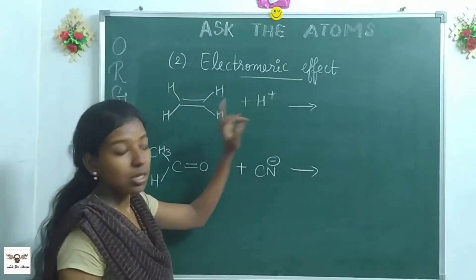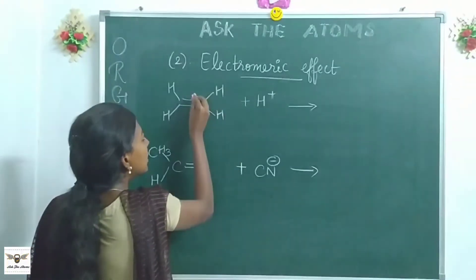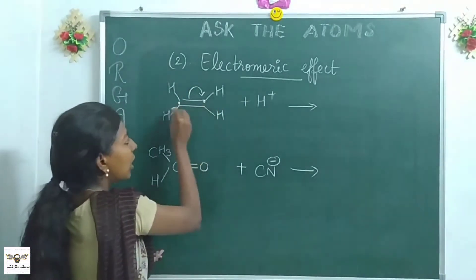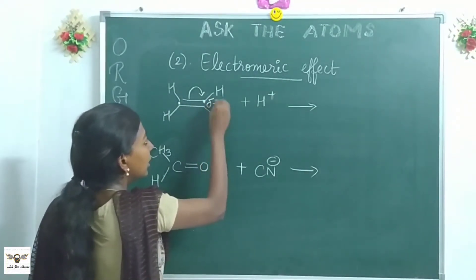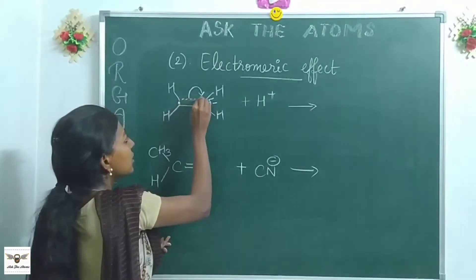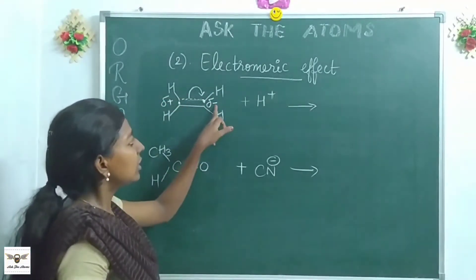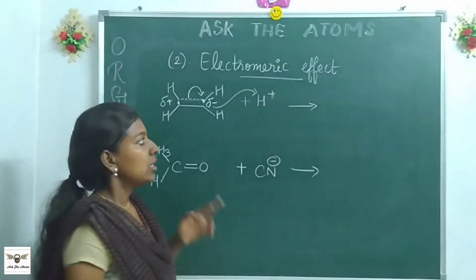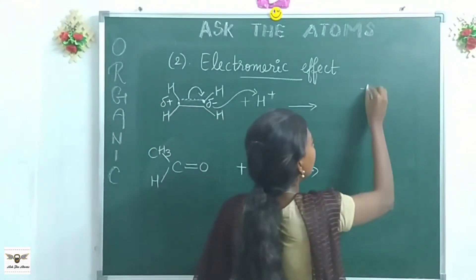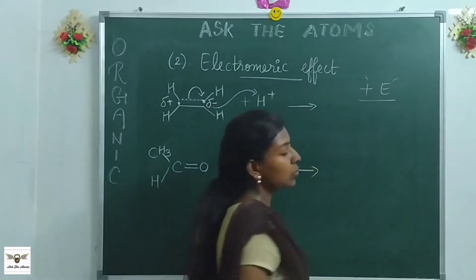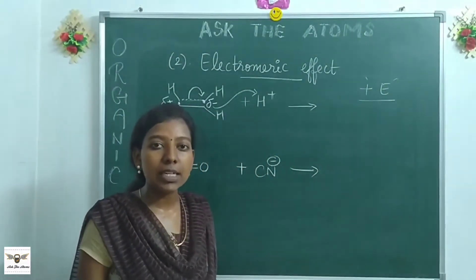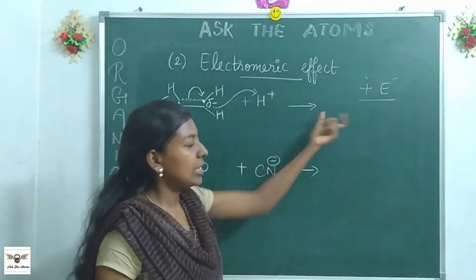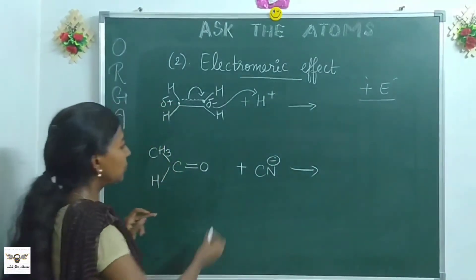Look at the first case: I have an alkene, ethylene, plus H⁺. H⁺ is an electrophilic reagent. H⁺ is positive, so an electrophile always wants to get attracted towards a nucleophile — opposite charges attract. H⁺ is going to search for a negatively charged partner, so it induces a negative charge in the substrate molecule. The pi electron density can be shifted over to one of the carbons to get a delta-negative charge, while the other carbon gets a delta-positive charge. This negative can then easily attack the positive electrophile. This effect is called the plus E (electromeric) effect.